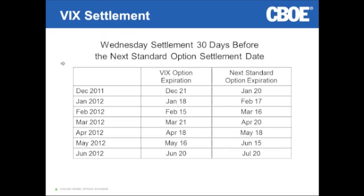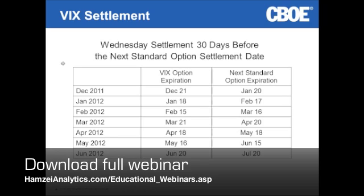That Wednesday settlement — for the longest time we had nothing but Friday settlement at the CBOE. The reason VIX settles on Wednesday is that we're settling 30-day implied volatility, 30 days before the next standard option expiration.